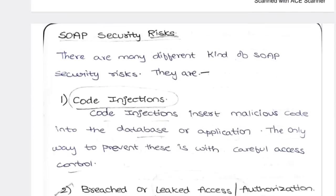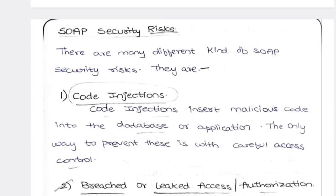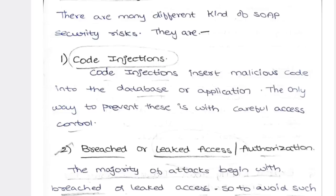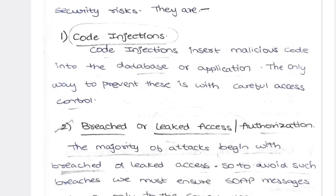SOAP security risks include: code injections — where malicious code is injected through links. If you click on a particular link, a code gets injected. That is also called database hacking.